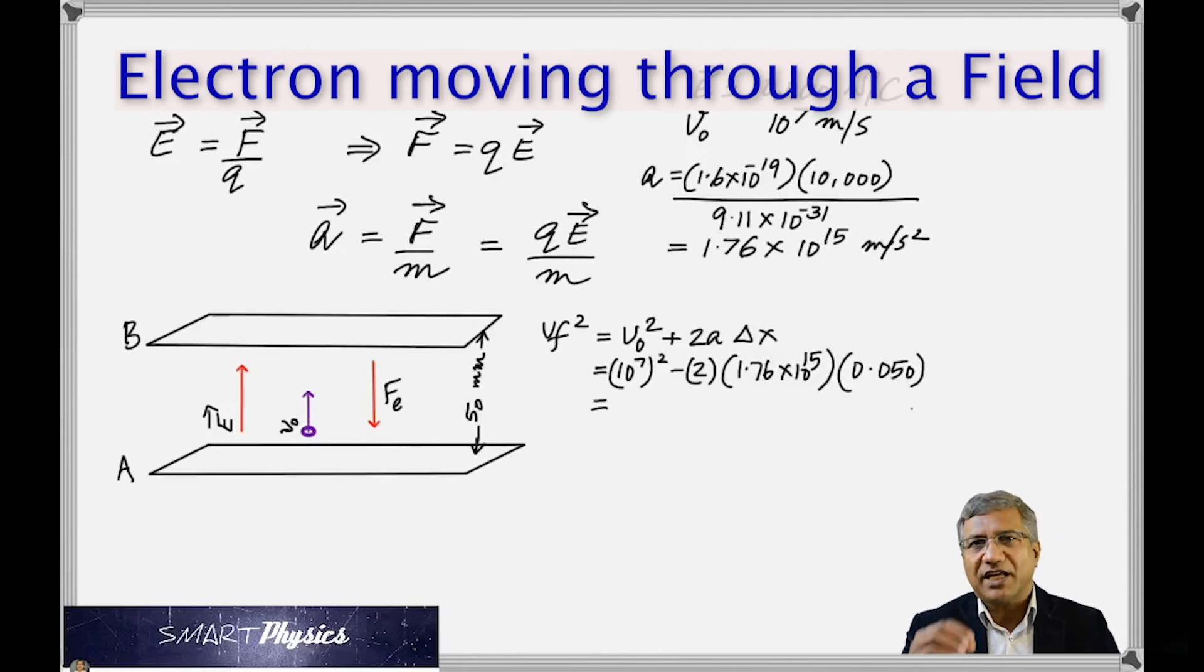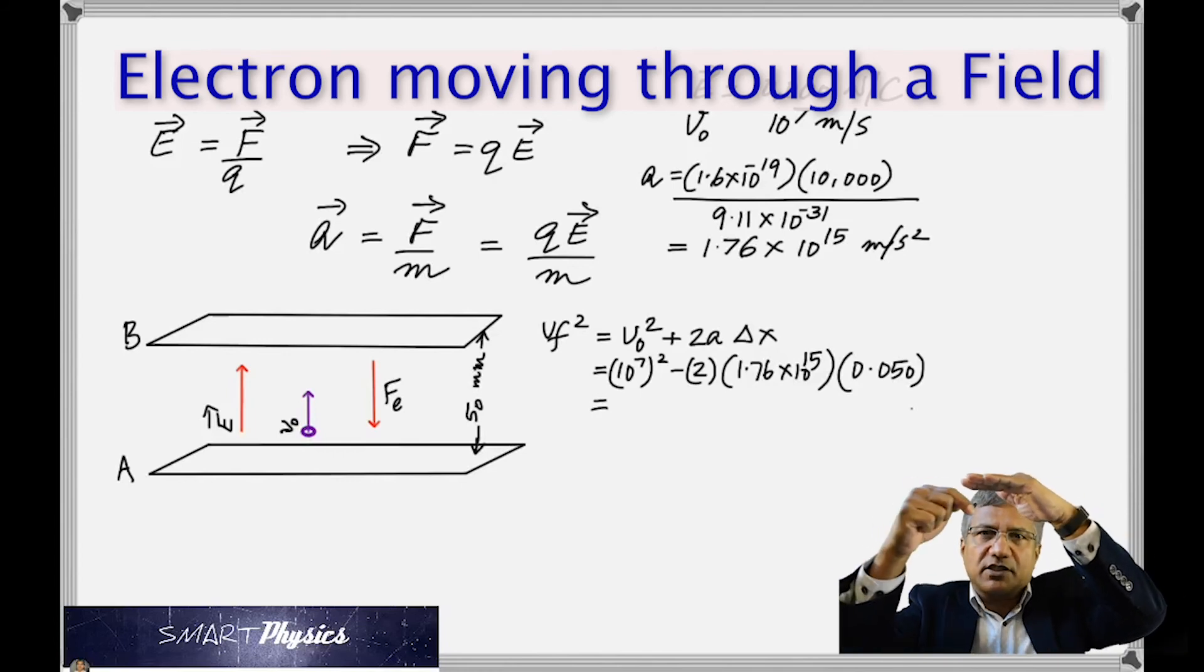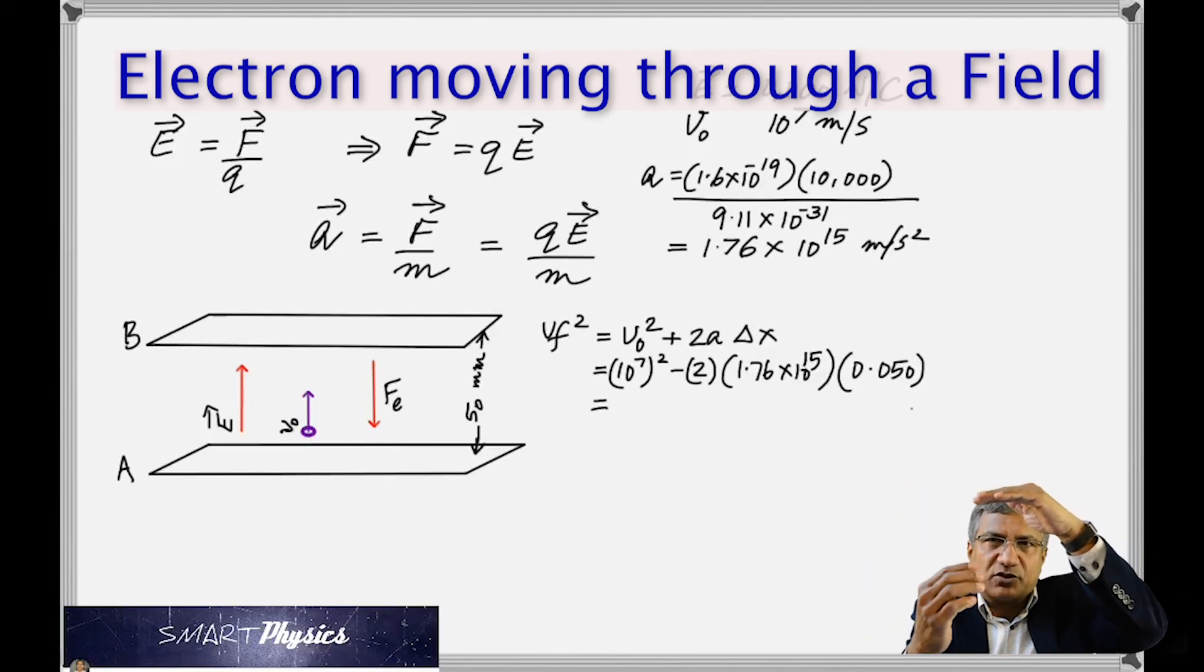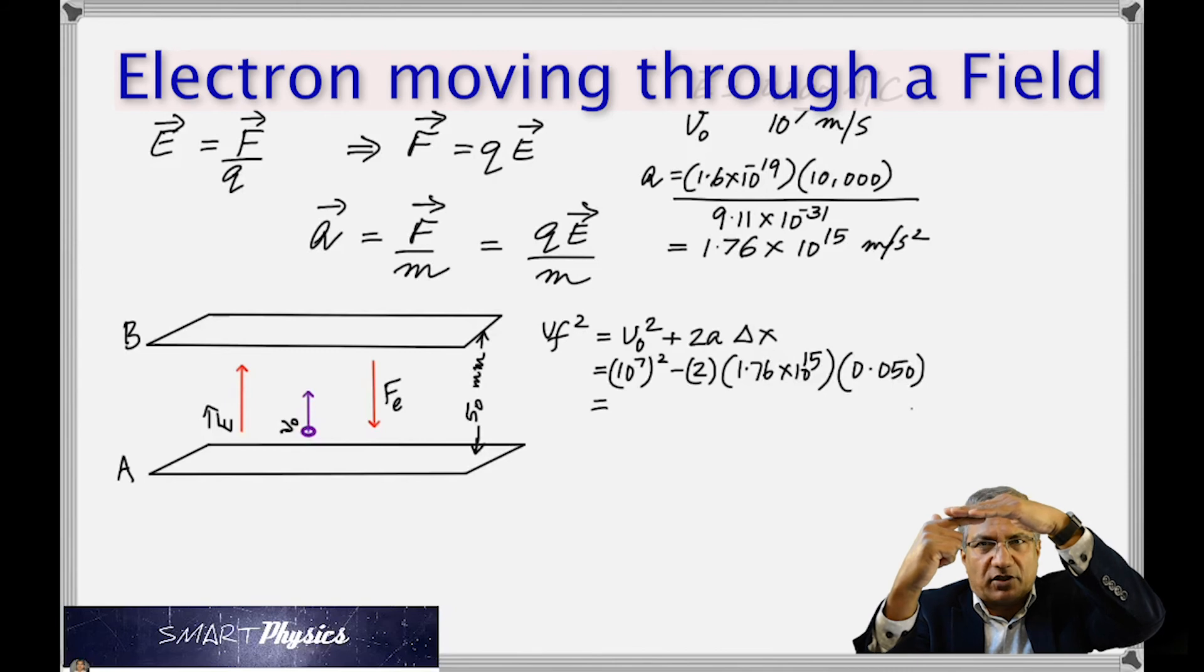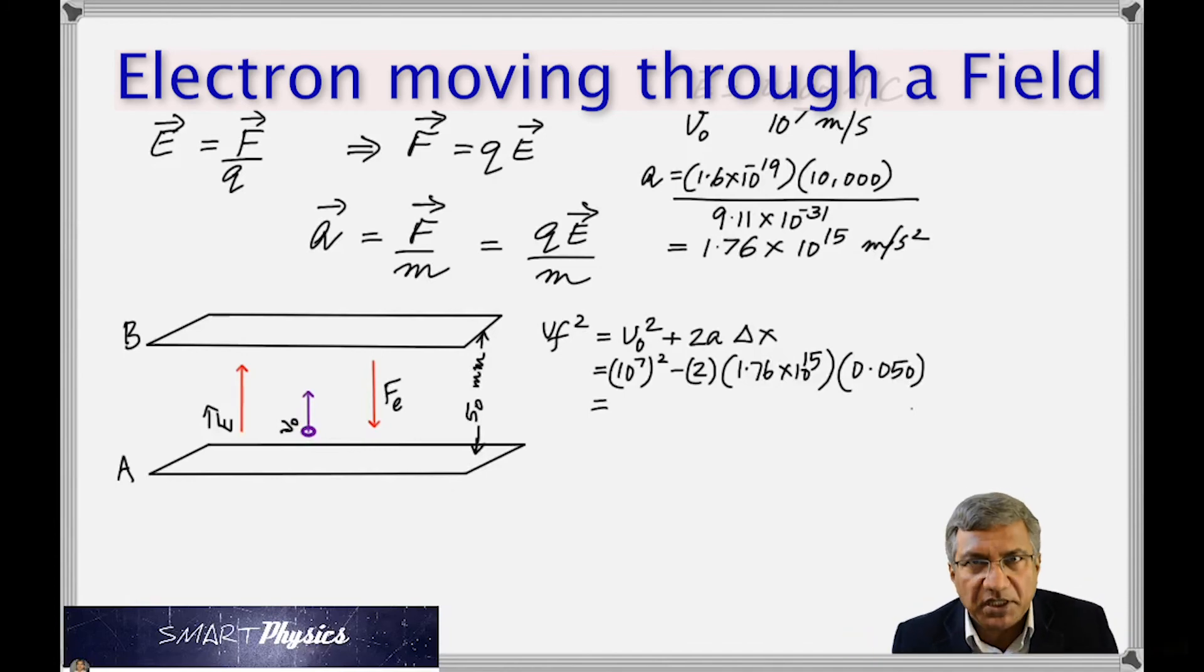Well, that's interesting because that means that the force on the electron is so big that its deceleration caused it to return before it hit the plate B. So it's like it gets there, it slows down, and then returns. Now since we're trying to find the velocity with which it reaches the plate B, and it does not actually reach the plate B, you're going to get a negative value.